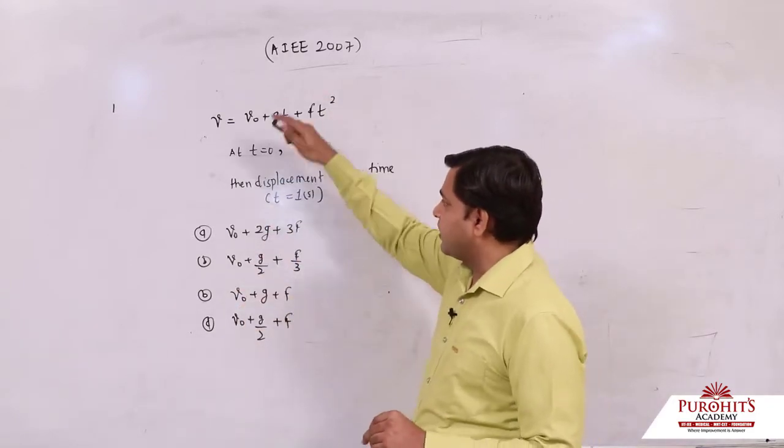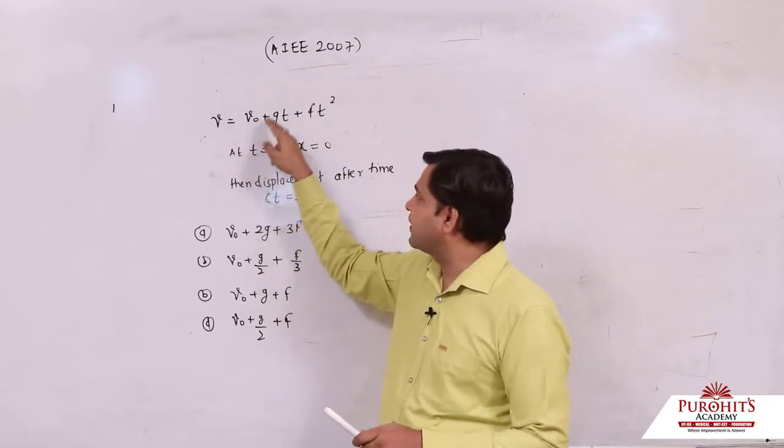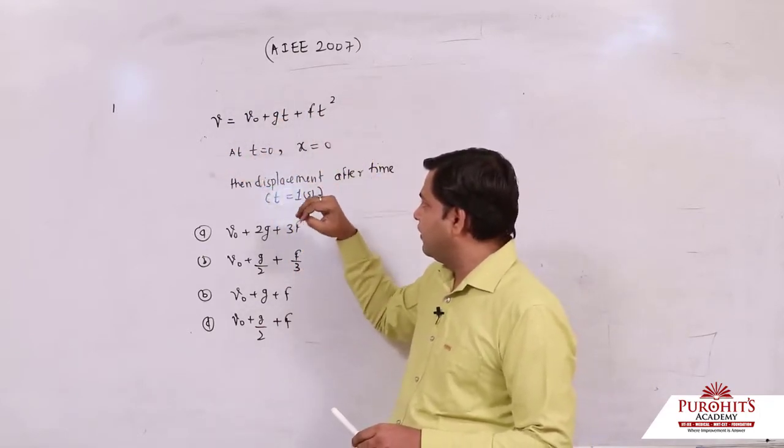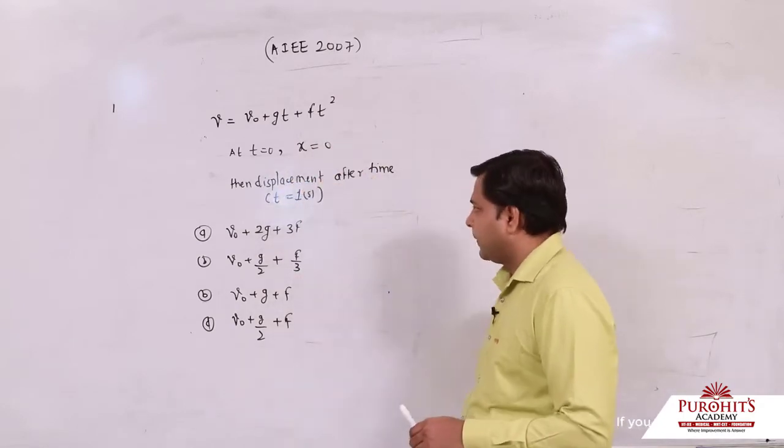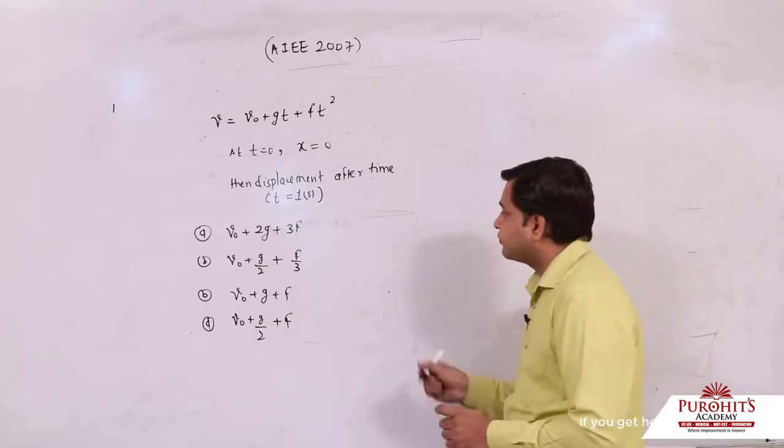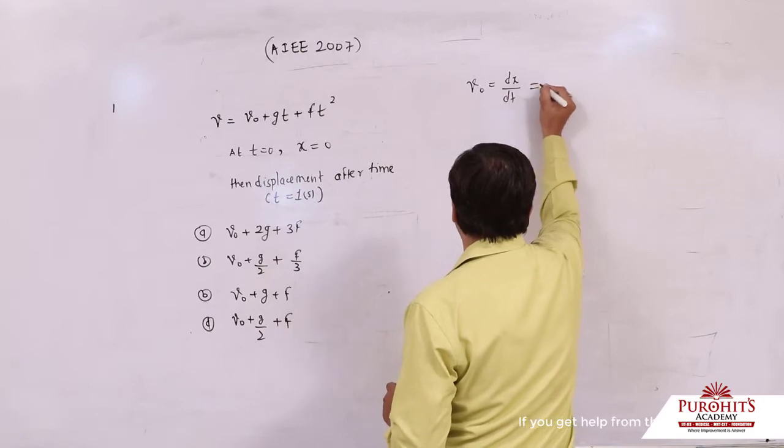The integration concept: displacement is given by integrating particle velocity. At time t equals 0, if x equals 0, then we need to find displacement at t equals 1 second. Rate of change of displacement is called velocity.